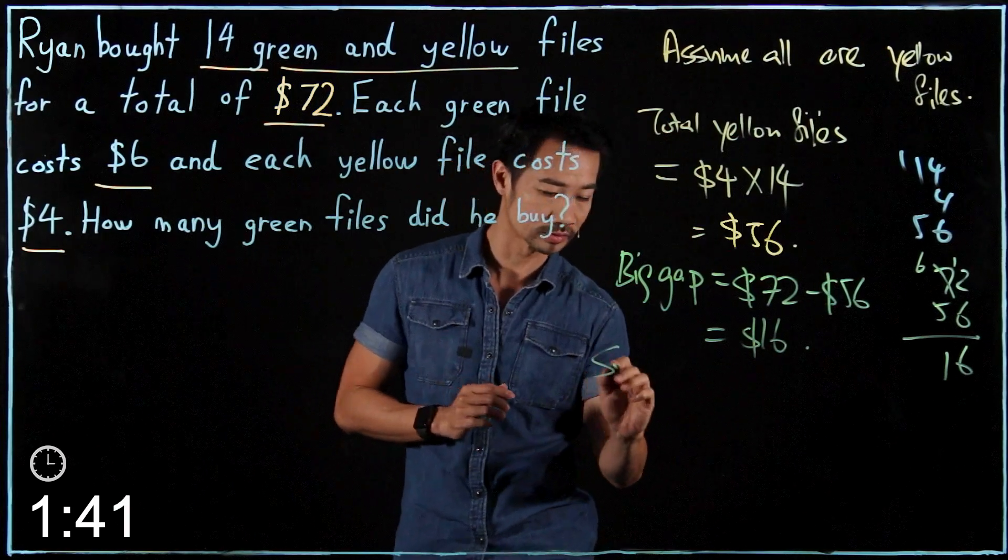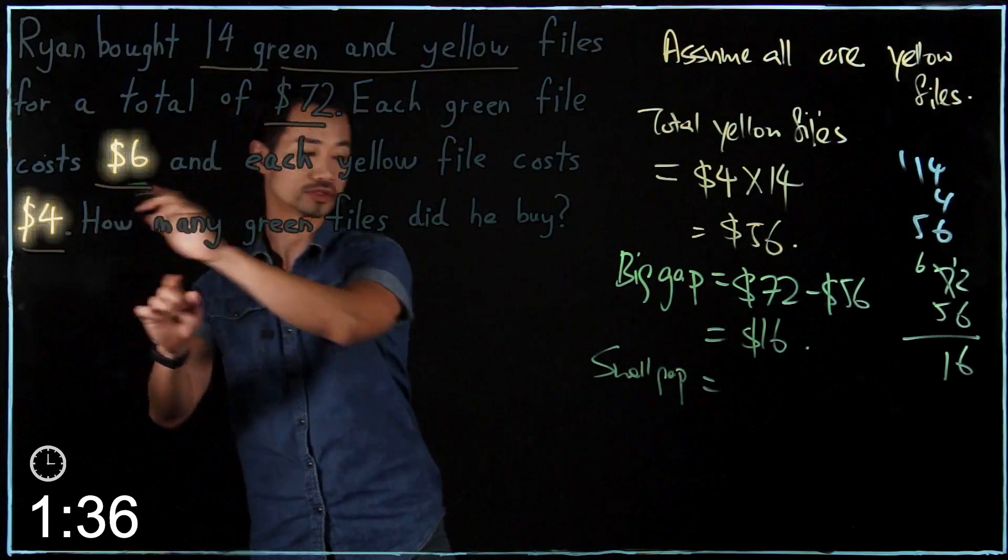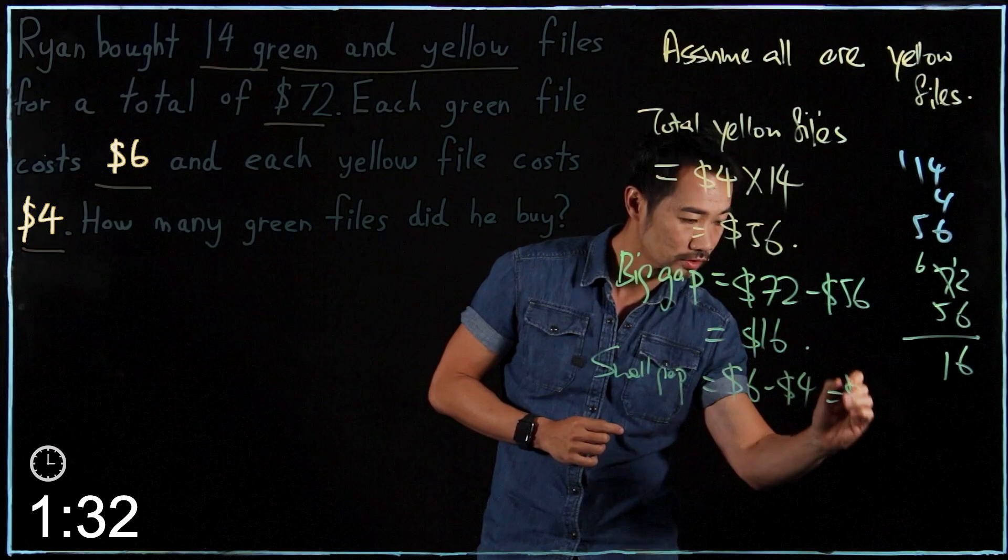And then the small gap. Small gap is equal to 6 minus 4, so that's 2. What's the next step?